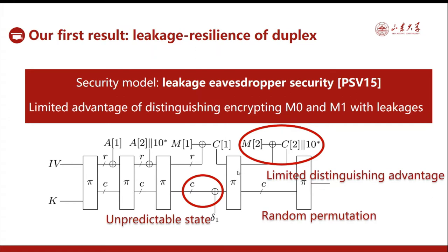Then we use another reduction to show that the advantage of distinguishing encrypting two long messages reduces to the advantage of distinguishing encrypting two messages of only a single block. This follows the CCS15 paper of our group. So the final result is that the duplex-based stream encryption is, in some sense, a security-preserving domain extension for the single-block leakage encryption.